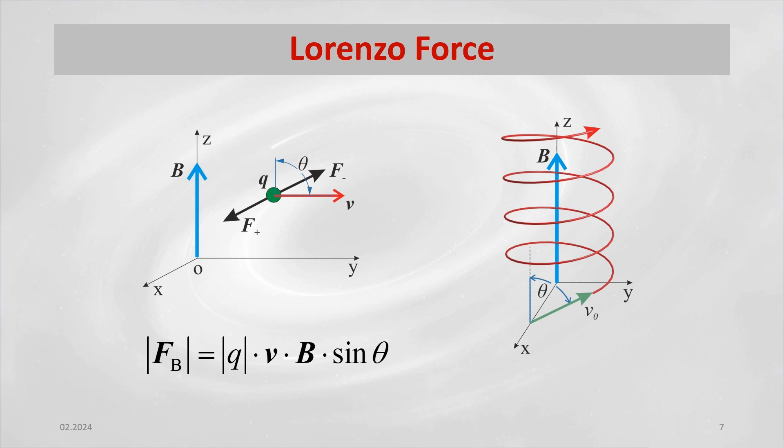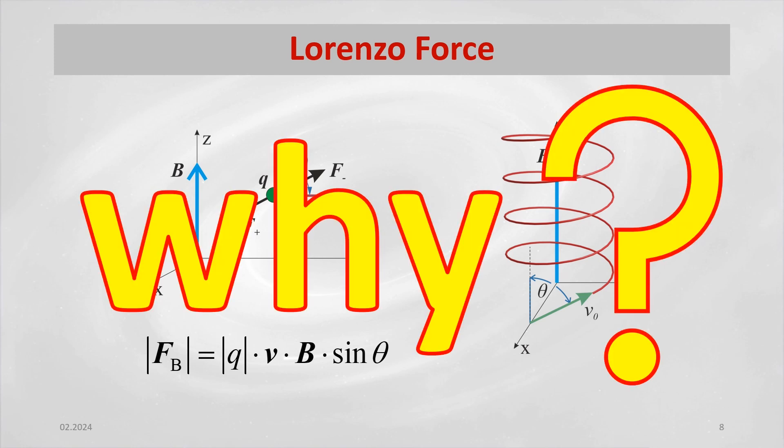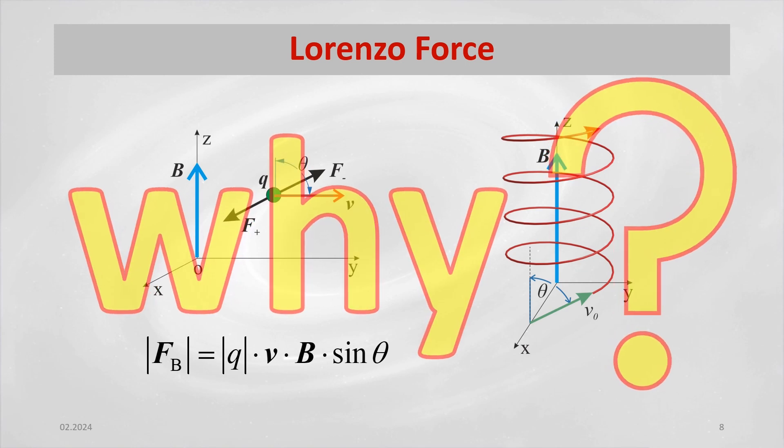The vector f is always perpendicular to the vectors v and b, and thus does not change the magnitude of the velocity v, nor the kinetic energy of the particle, but changes the direction of the velocity v. Why and how this force is generated cannot be explained when using the point charge model of the electron.